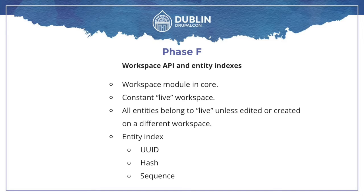At the bottom I've also got entity indexes, which we use quite a lot in contrib. We have an index for UUID, revision hash, and a sequence index. This allows fast lookups by entity UUID, by revision hash, and the sequence stores a log of every entity change on the whole site — much like a Git log — so we can see exactly what happened between sequence item A and sequence item B. That's going to be pretty important when we start looking at replication.